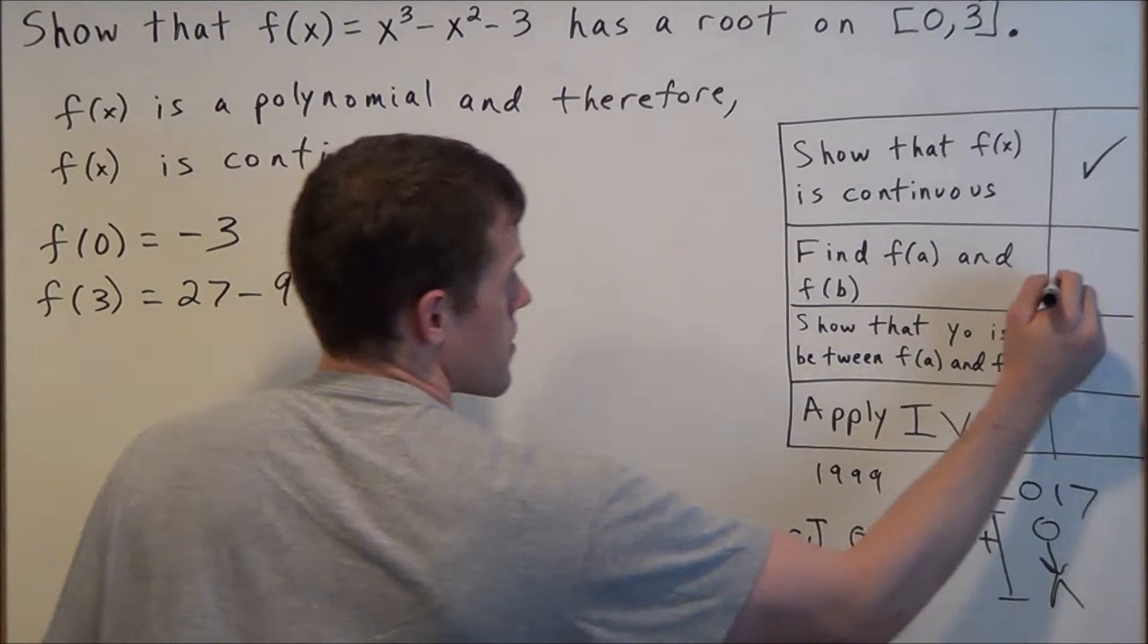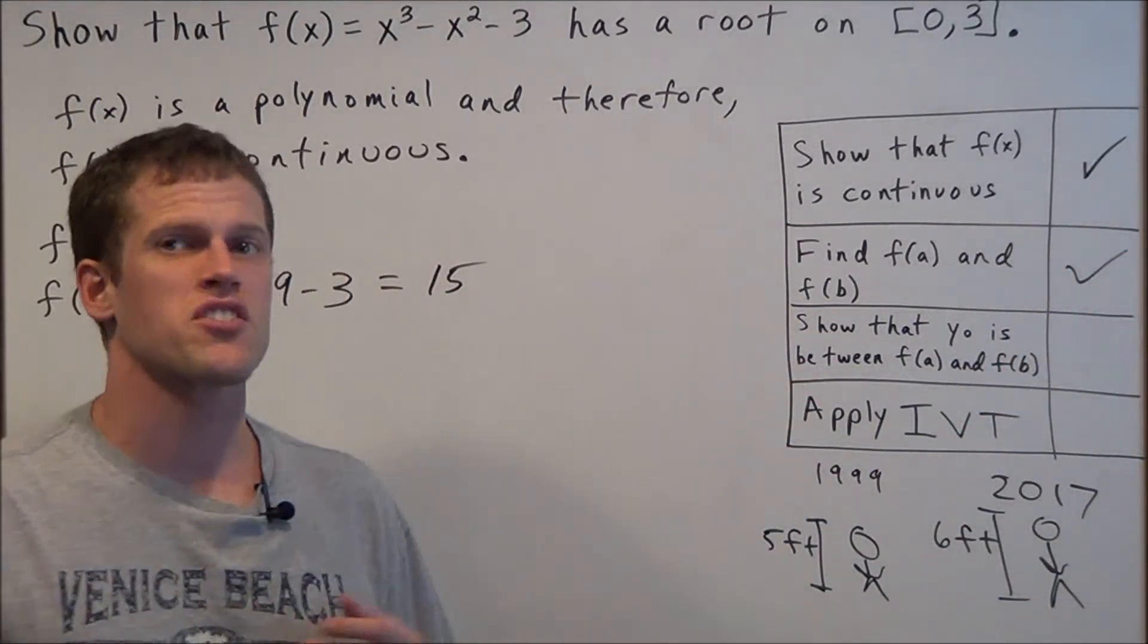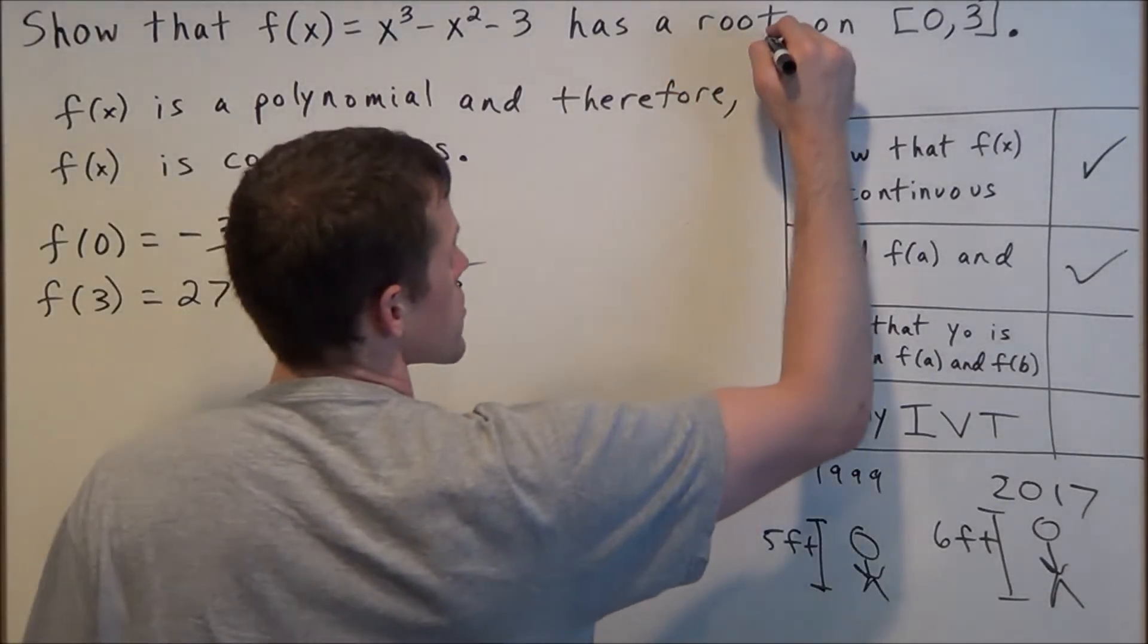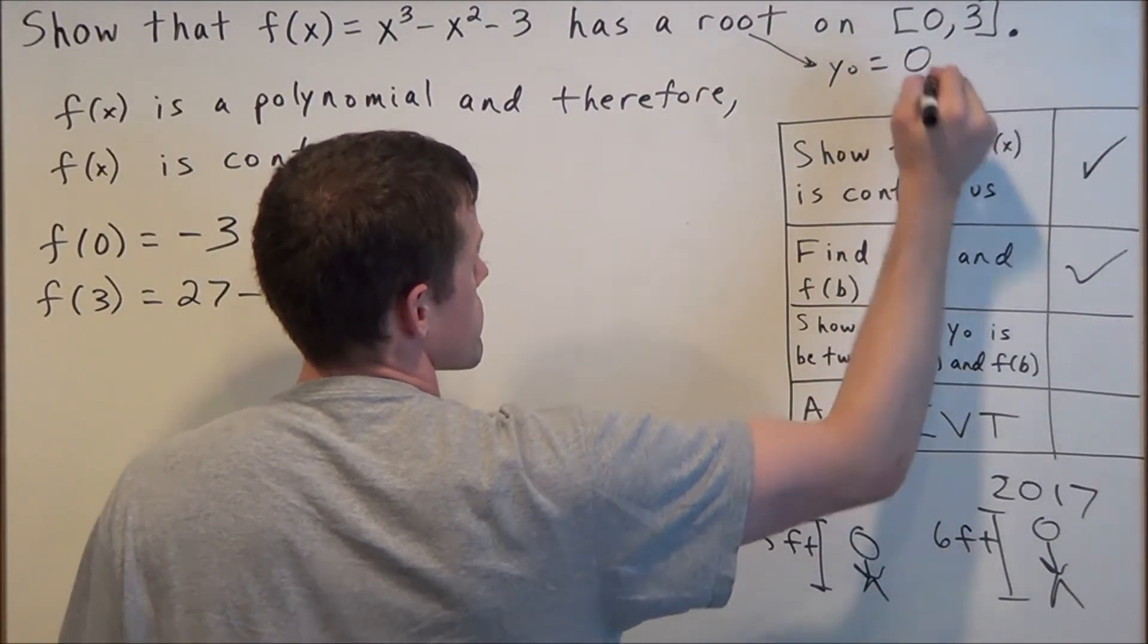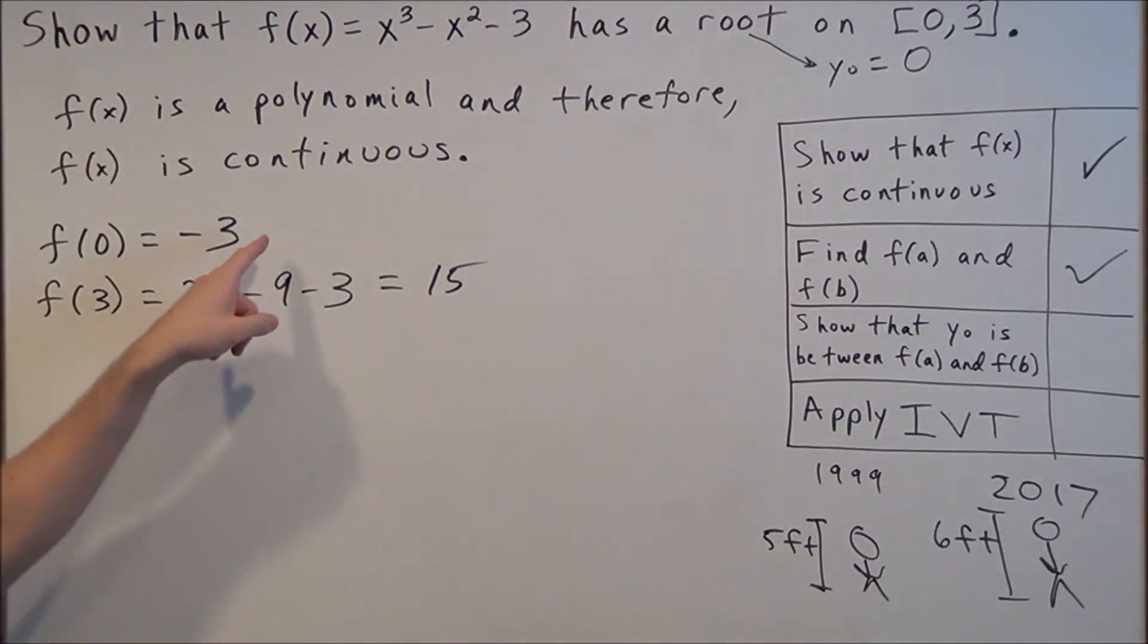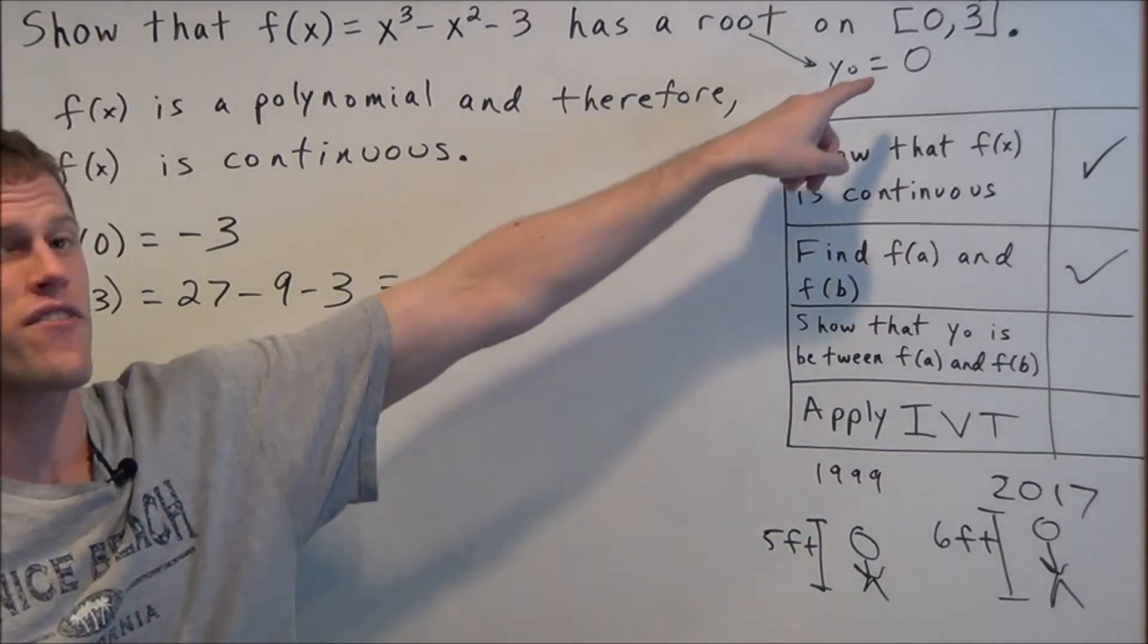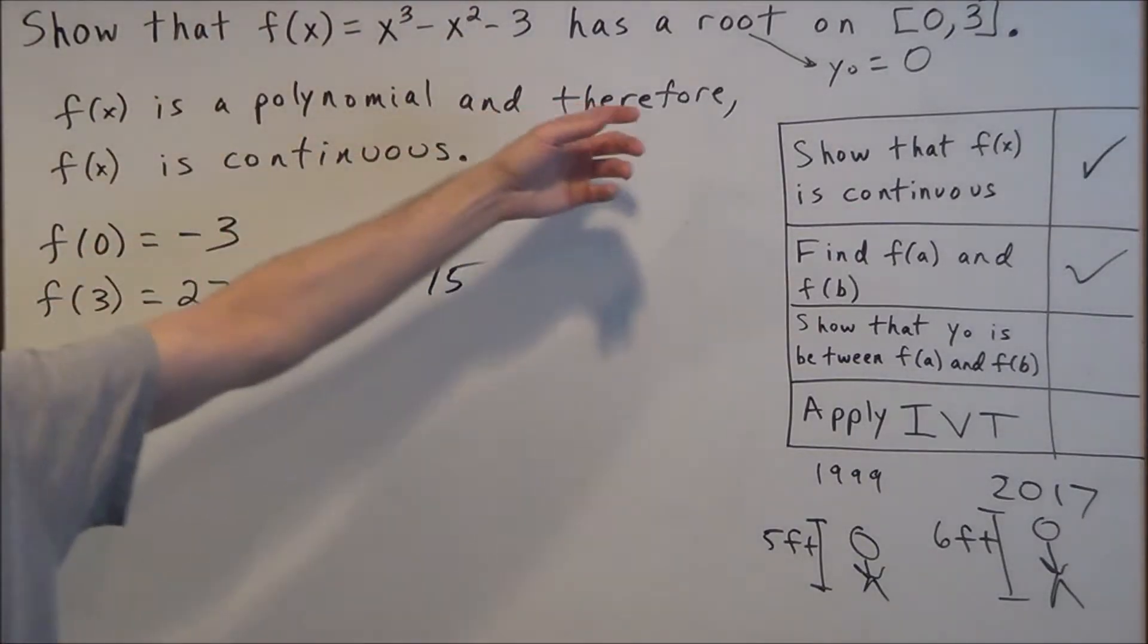Once we have these values, we want to show that y₀ is between f(a) and f(b). Think about what we're actually trying to show here: we're trying to show that this function has a root, which in plain English means our y₀ value equals 0 at some point. Well, if you notice, on our way from -3 to 15, we do have to pass through 0. So this is in fact true—we will have a root on the interval from 0 to 3.